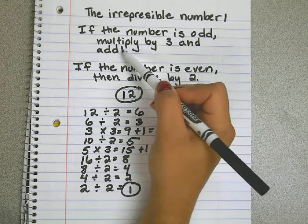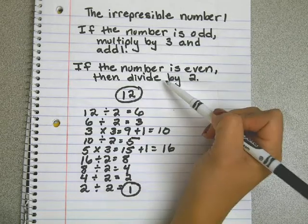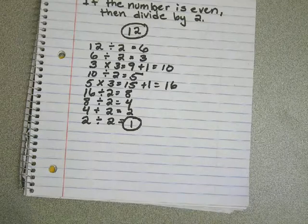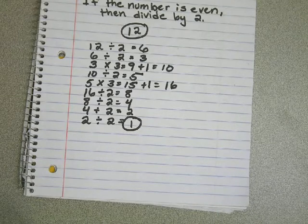If it's odd, multiply by three and add one. If it's even, divide by two. Eventually you will get down to one. Thank you.